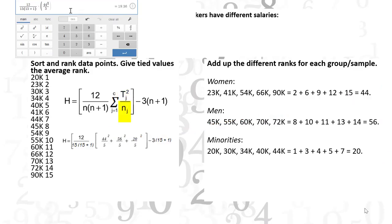And n sub j is the size of the jth sample. All of our samples have 5 items.